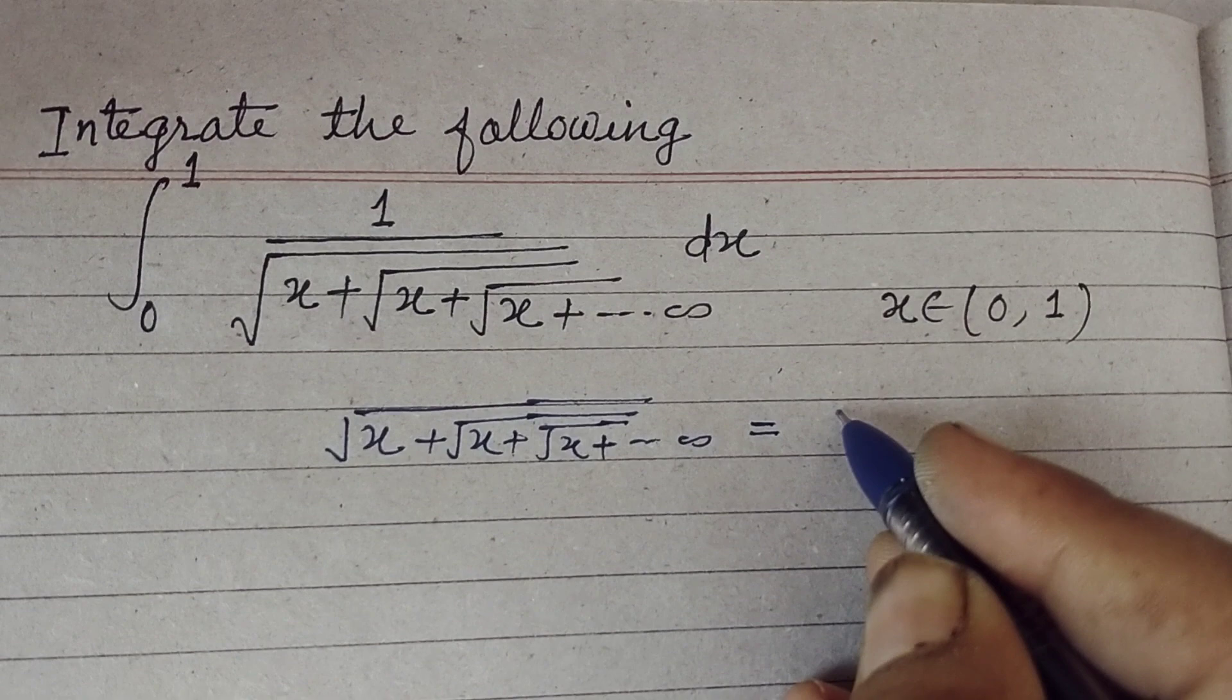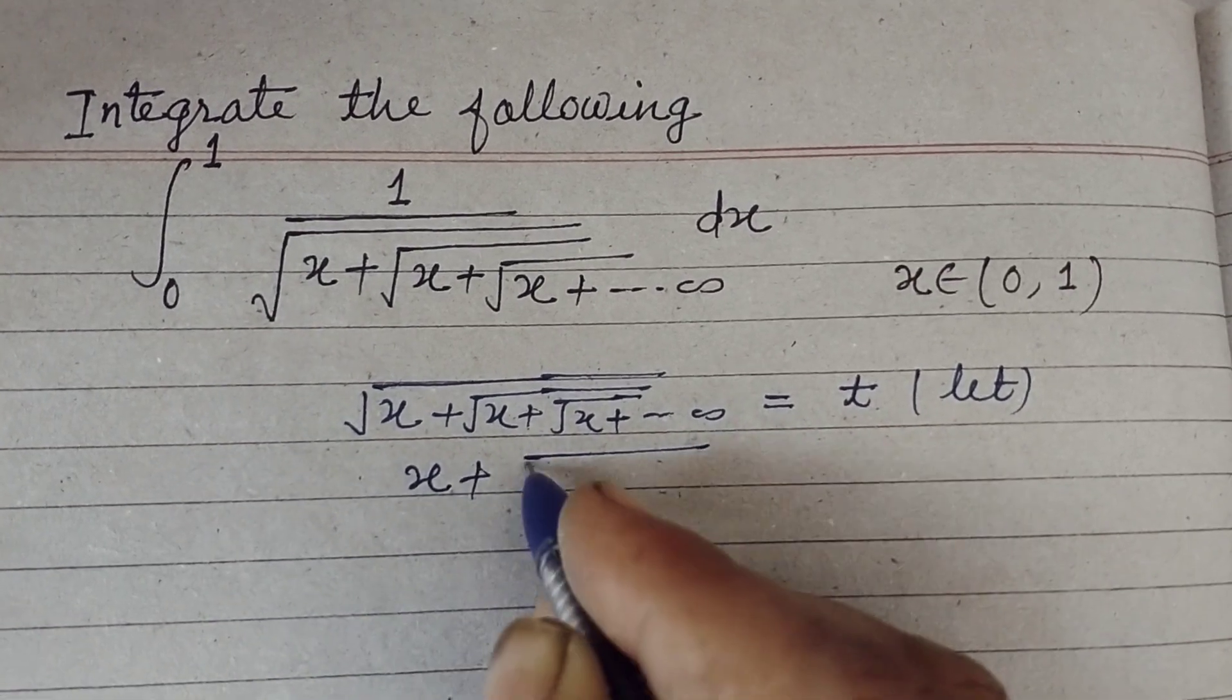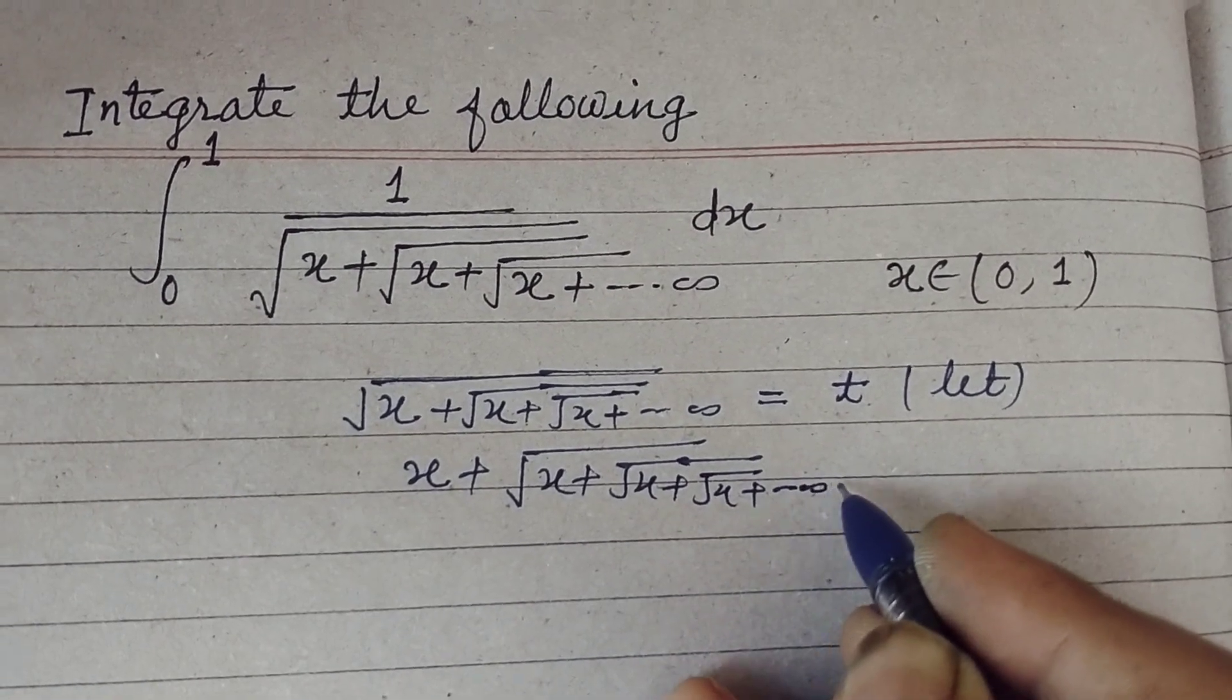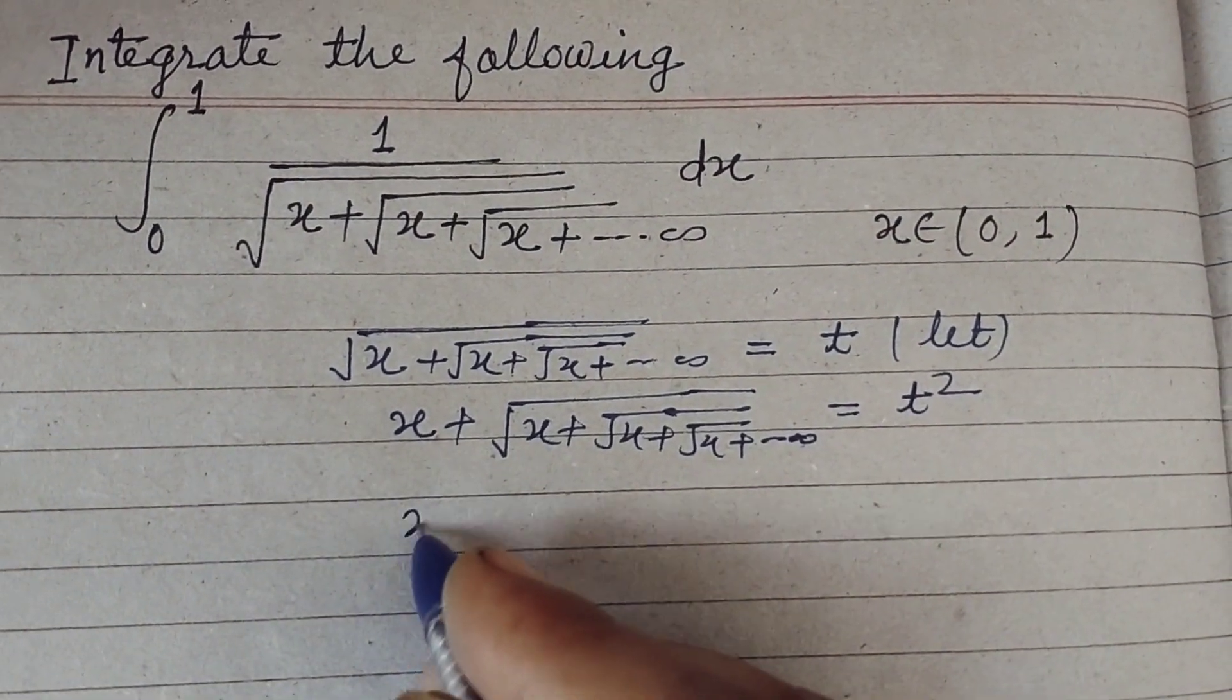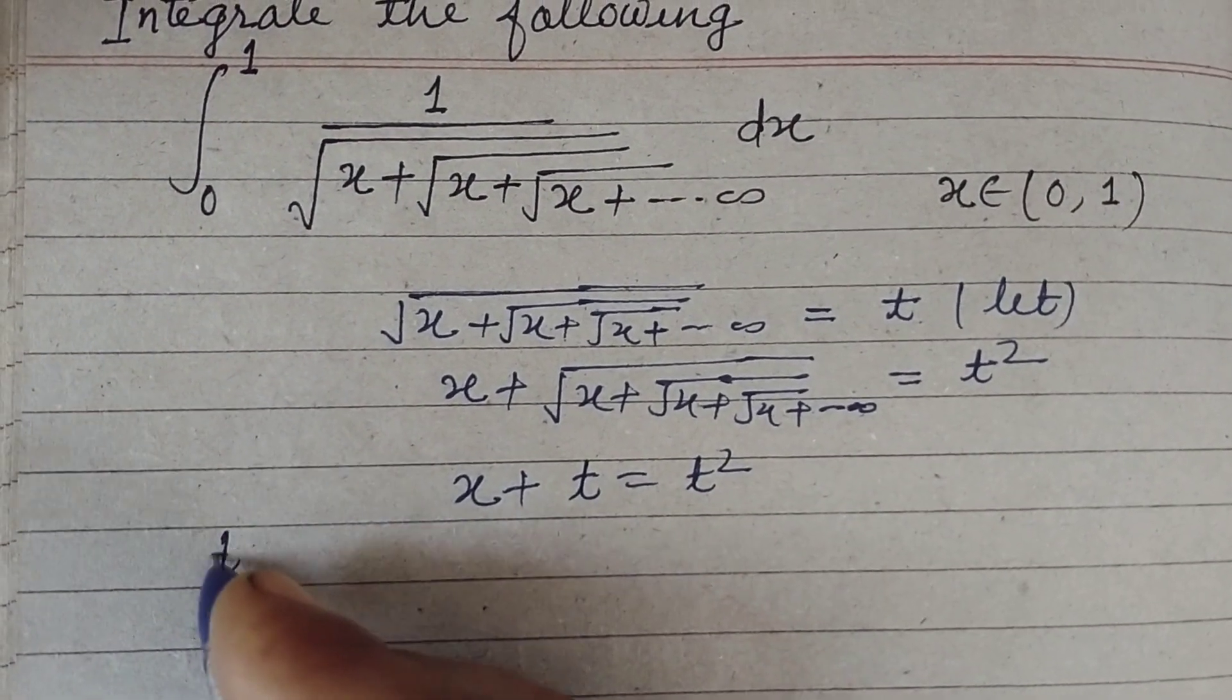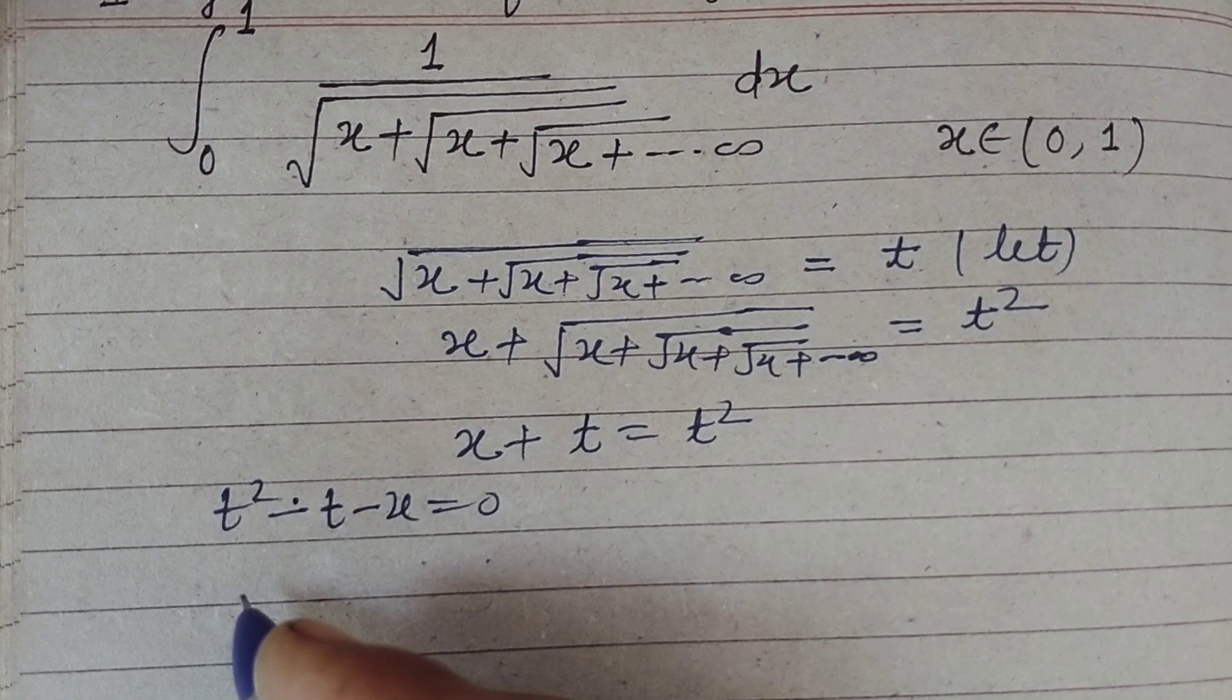Let this equal to t. Now squaring both sides we get x plus root of x plus root of x plus and so on up to infinite, and this equals t square. So what is this? This is also t. So x plus t equal to t square.